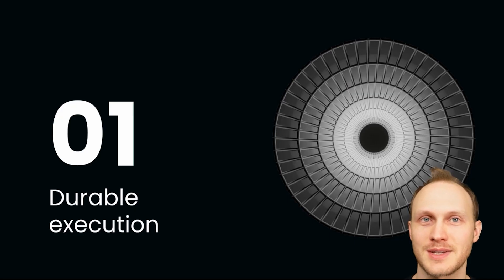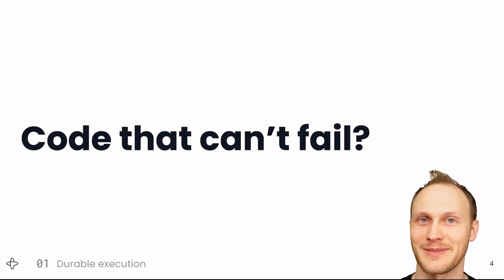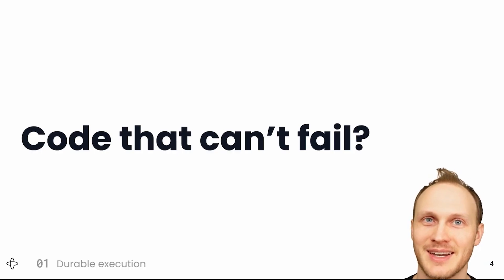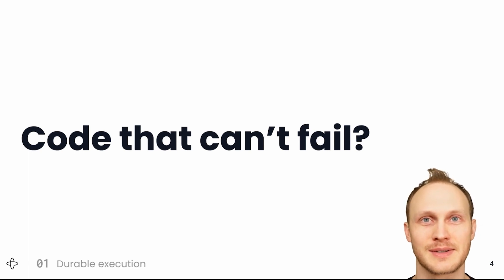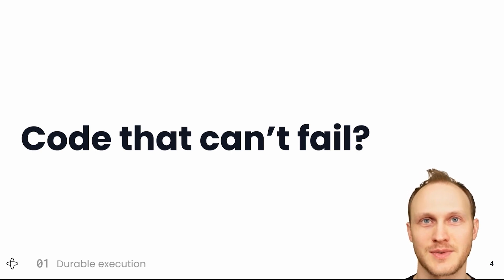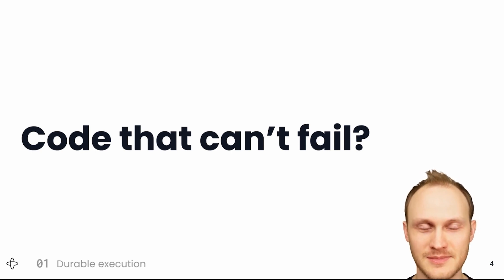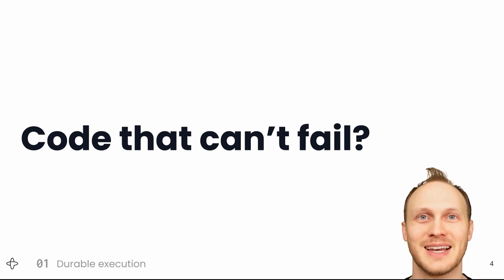Part one: durable execution. So what even is code that can't fail? I don't mean expected errors like your code charges a card and gets a card expired error. What I mean is that you can write a function that will not fail to complete executing. It is guaranteed to finish running. Now, you might be thinking, what's the big deal? Of course my function's finished executing. That's how code works.